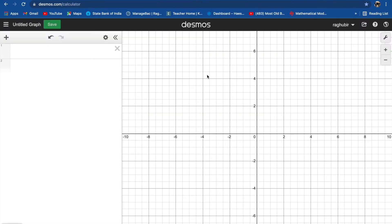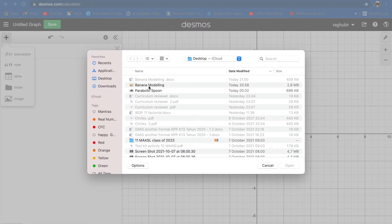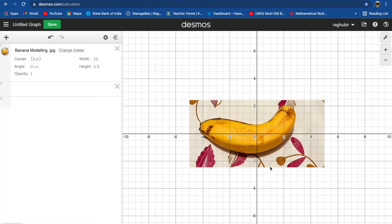After logging in, you see there is a plus button add item. Press choose option image and bring the image you want to model. I have two images, one is parabolic spoon and the other is banana model which I took from my kitchen today. So let's import banana image on Desmos.com and adjust the center.